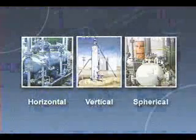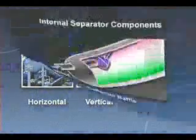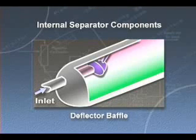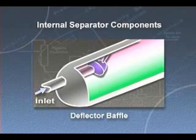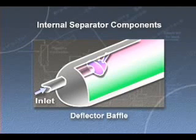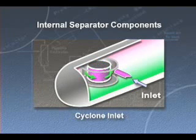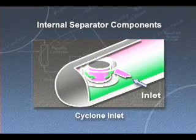All separator types have in common certain internal vessel components. Inlet diverters provide the initial gross separation by changing the flow direction as fluid enters the vessel. The deflector baffle shown here is one type of commonly used inlet diverter. Another is the cyclone inlet.